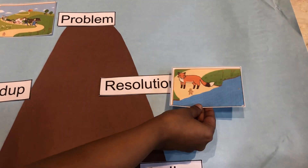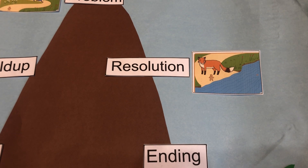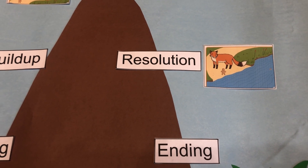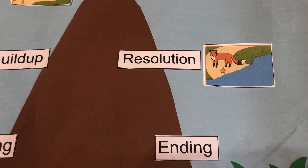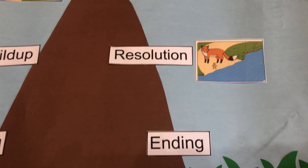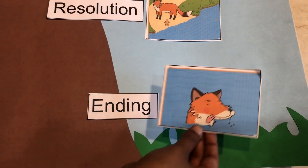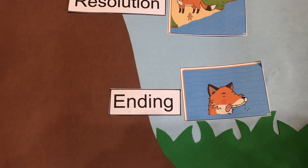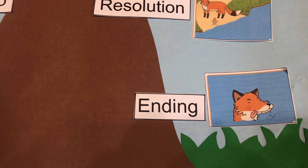However, the gingerbread man came to a river. He did not know how to swim and he met a clever old fox. The fox convinced him to sit on his back, and in the end the gingerbread man was eaten up by the fox.